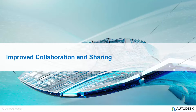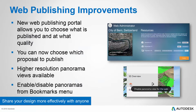The last area we're going to cover is improved collaboration and sharing. InfraWorks 360 has the ability to publish your models to the web in several different forms, making it easy to share them with anyone, anywhere. We've improved that capability by adding a web administrator portal, which allows you to control what's being published. Your choices are scenarios, panoramas, and now proposals — in the past you could only publish the master proposal, but now you have control over publishing any proposal in the model. We're also providing higher resolution panorama views and the ability to enable and disable panoramas right from the bookmarks menu. This allows you to share your designs with anyone more effectively than ever before.